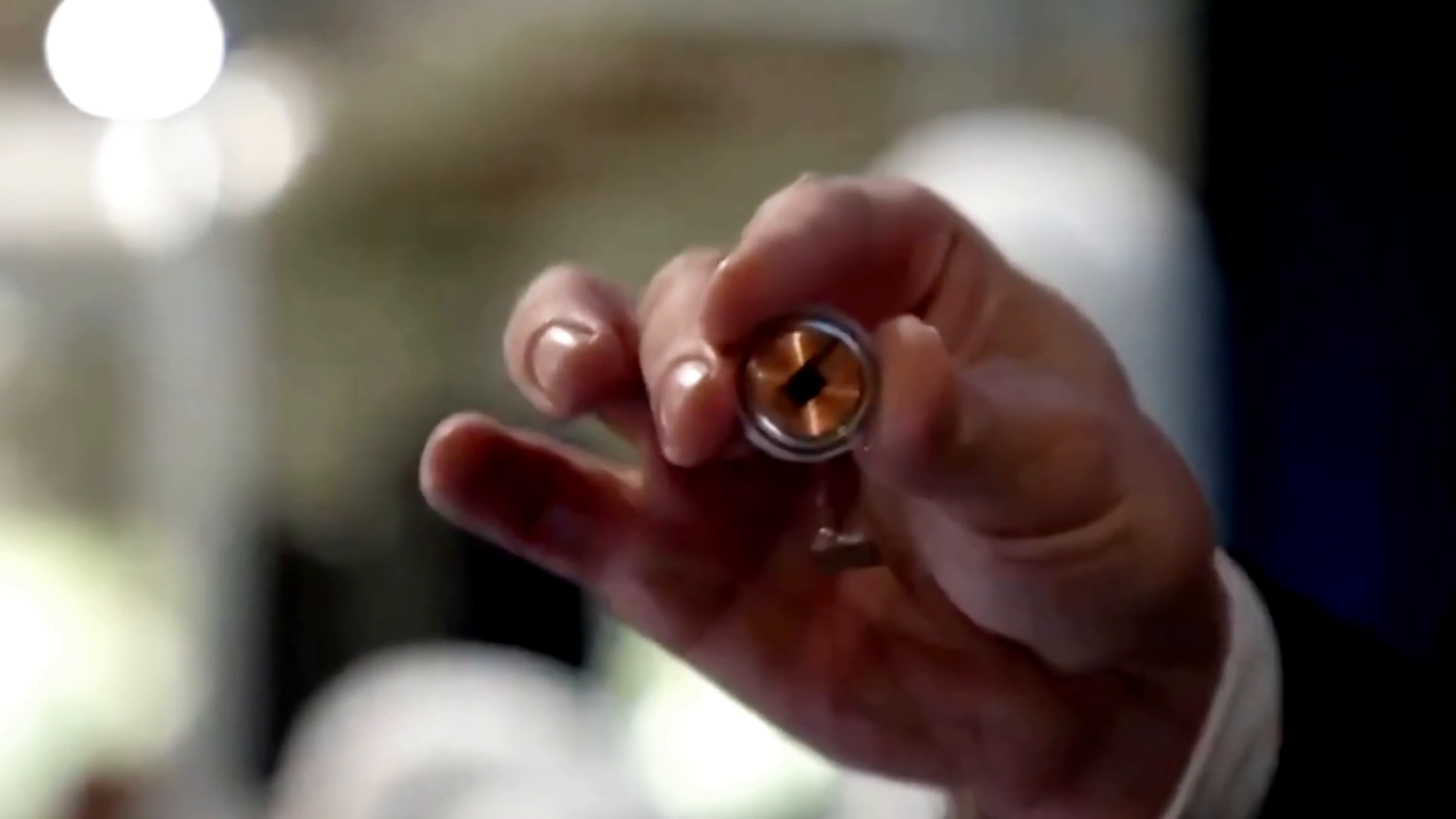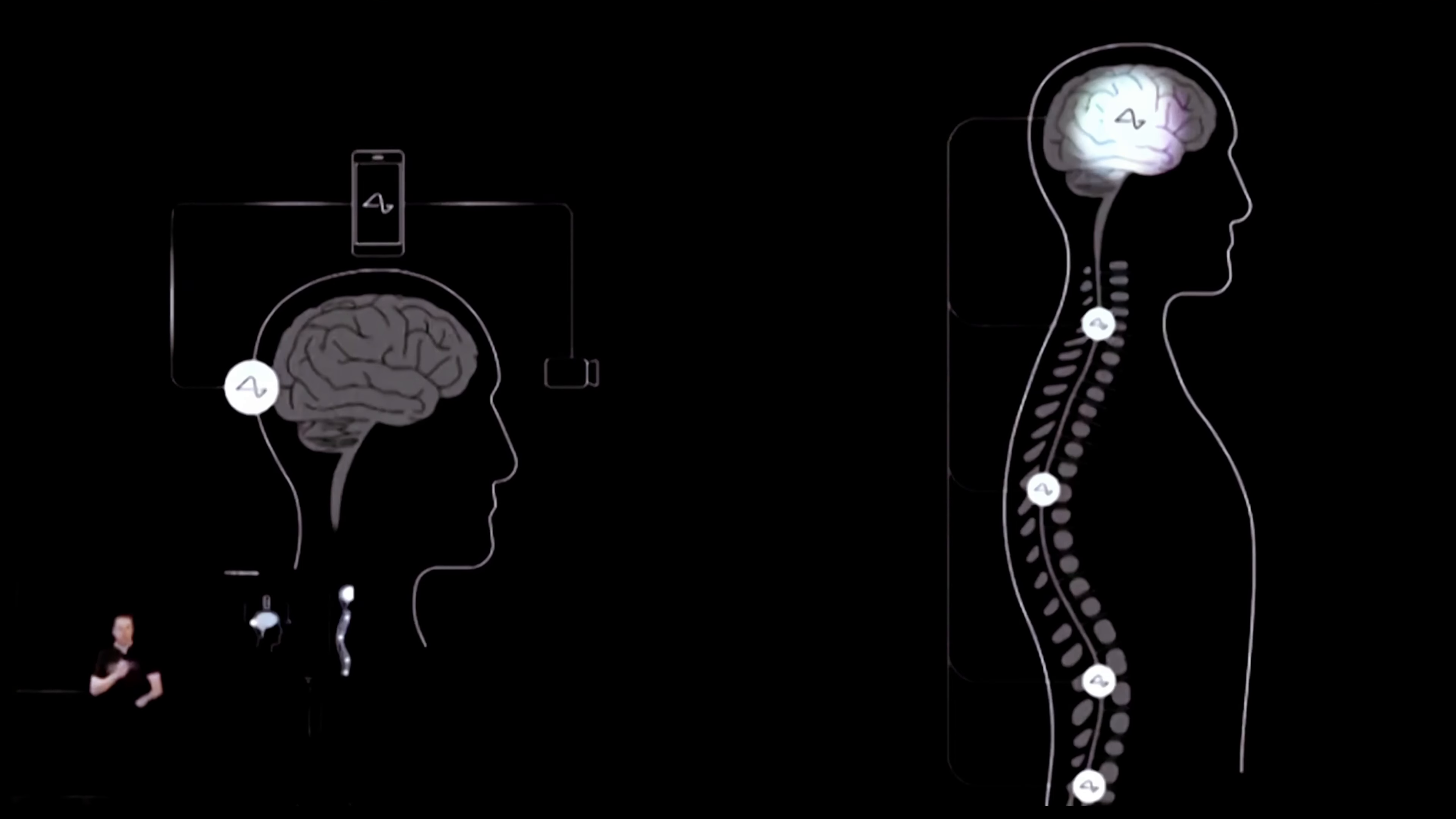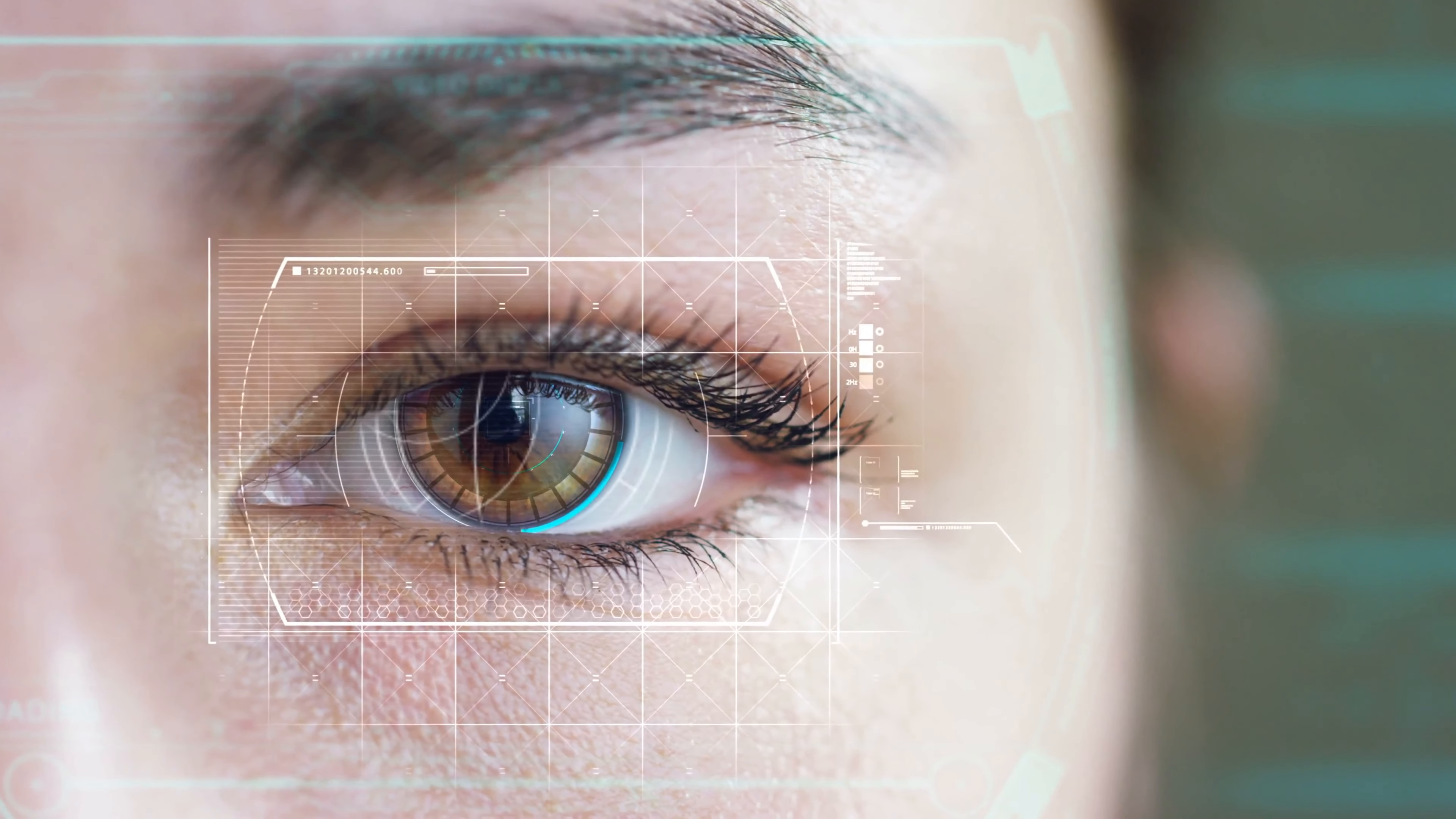Elon Musk's brain-computer interface company Neuralink is installing their devices called Telepathy in human test subjects. Every minute of every day, these interfaces are expanding the science of neurology. You won't want to miss what Elon learned about neurology and how he plans to use it to restore vision with bionic eyes.